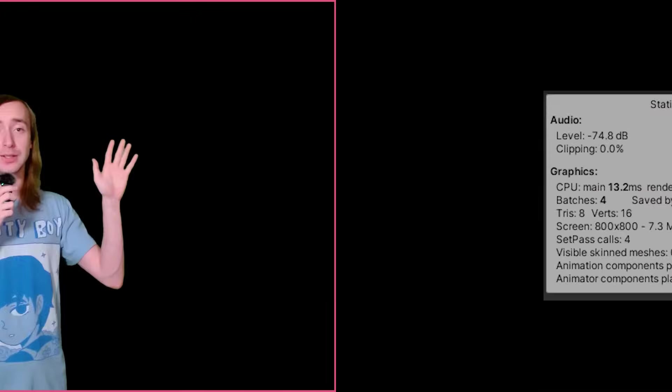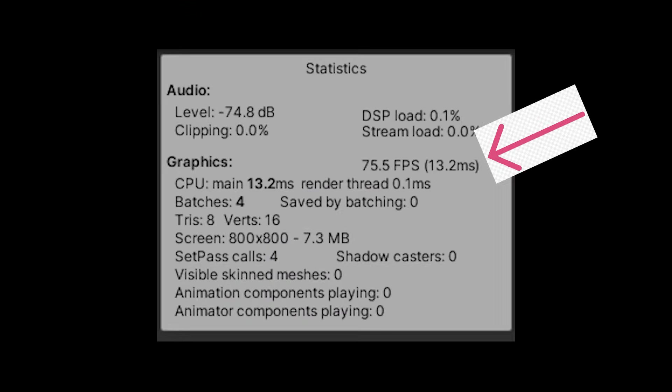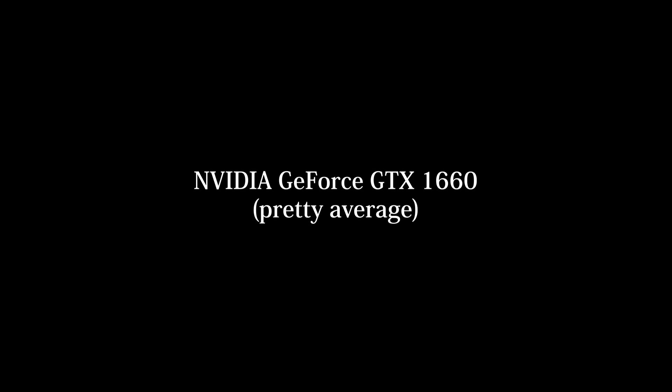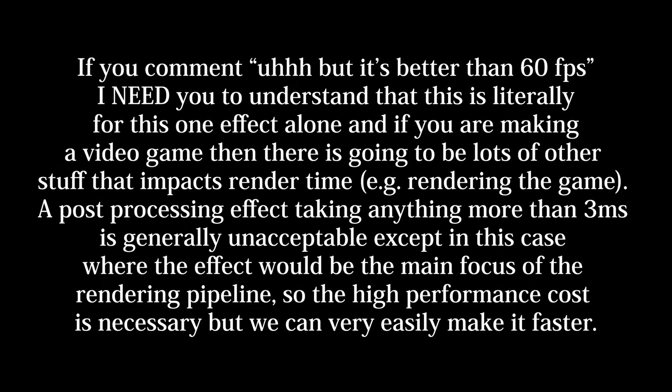It's the performance police! It turns out, calculating 800 Gaussian weights per pixel is borderline illegal! Our frame time is currently about 13 milliseconds on my GPU, which is extremely slow. The reason it's so bad is because Gaussian functions are extremely expensive.